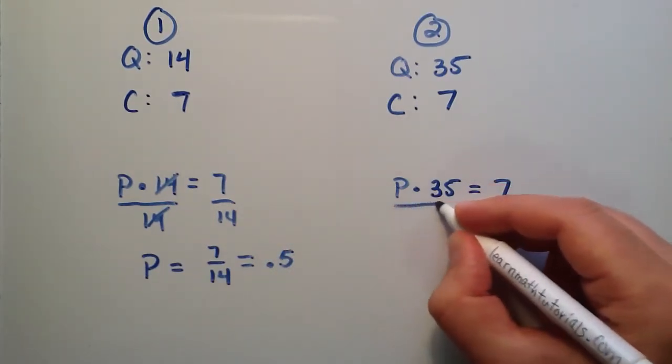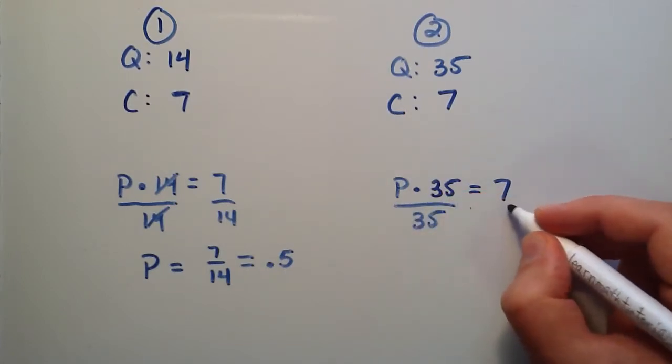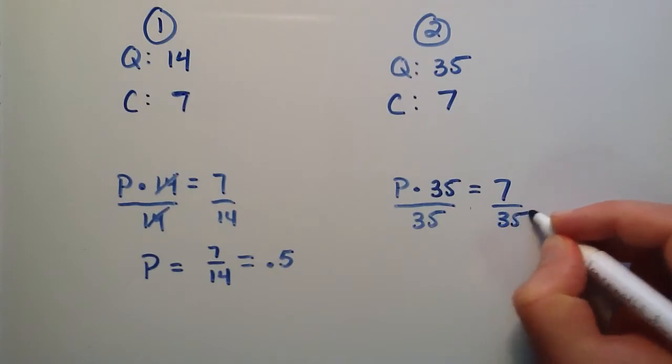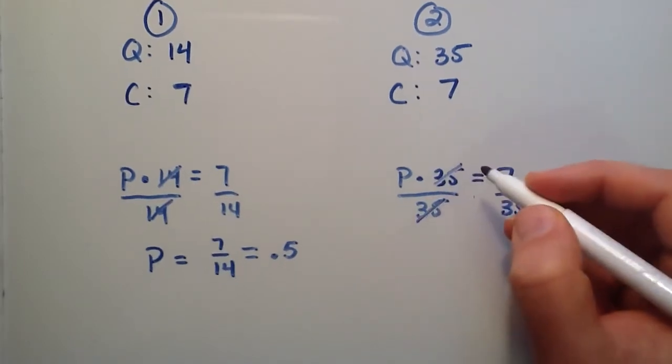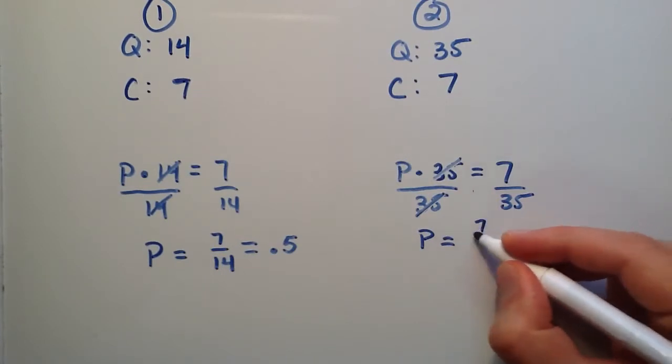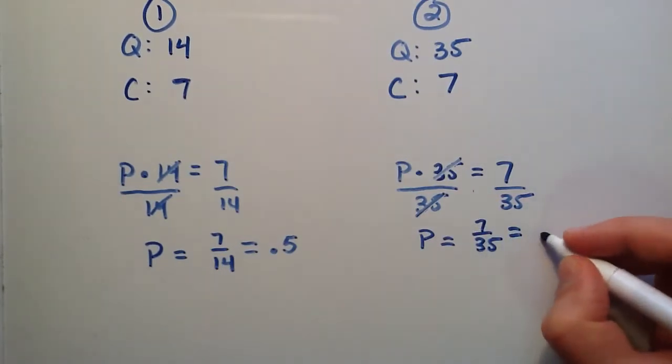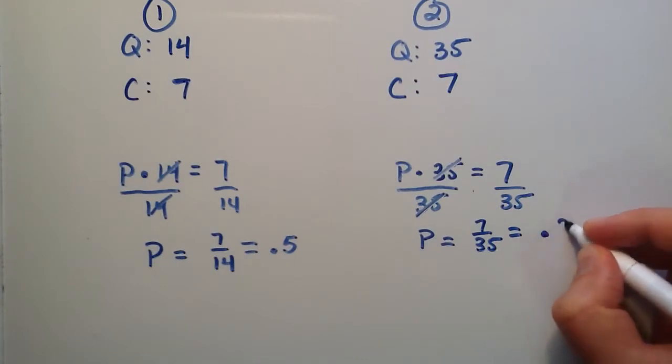In this case for student two we divide each side by 35 so that we can isolate P by itself on one side. And 35 over 35 cancels, just giving us P. P equals 7 over 35, and you could plug that in on your calculator as well, and that will give you the result 0.2.